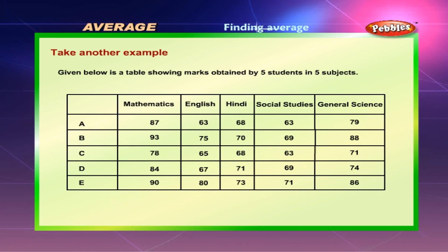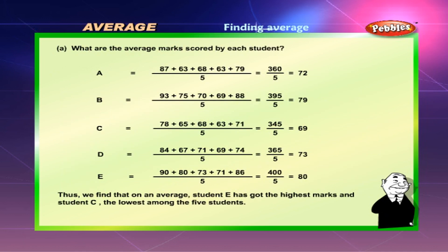Given below is a table showing marks obtained by five students in five subjects. What are the average marks scored by each student? For student A: 87 + 63 + 68 + 63 + 79 divided by 5 is equal to 360 divided by 5, which is equal to 72.